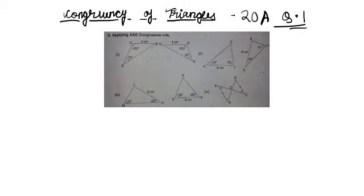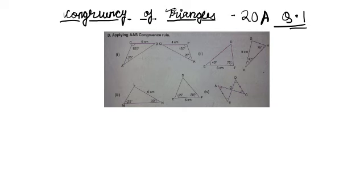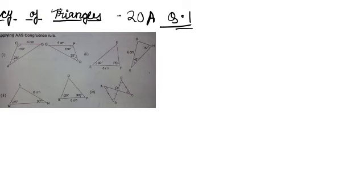Hello friends, welcome back to my YouTube channel. In this video we are going to solve ICRC Mathematics Class 7, Chapter 20: Congruency of Triangles, Exercise 20A, first question. We are going to use another rule — we have used so many rules so far, like SSS, ASA, and SAS.